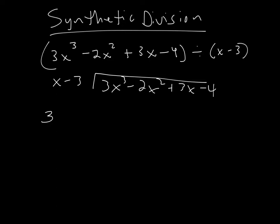Step 1 is, if it's x minus 3, then we're actually going to consider the divisor to be just 3. So we're going to write a 3 here. If this was plus here, then we'd put a negative here. If it's minus here, we're putting a plus here. And then we're going to make a big old L, something like this.